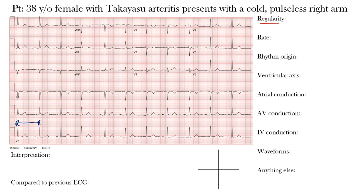Continuing through the rhythm strip, all of these R-to-R intervals are the same — the duration between them is quite similar. Because of that, we call this a regular rhythm. So the regularity of the rhythm is regular.